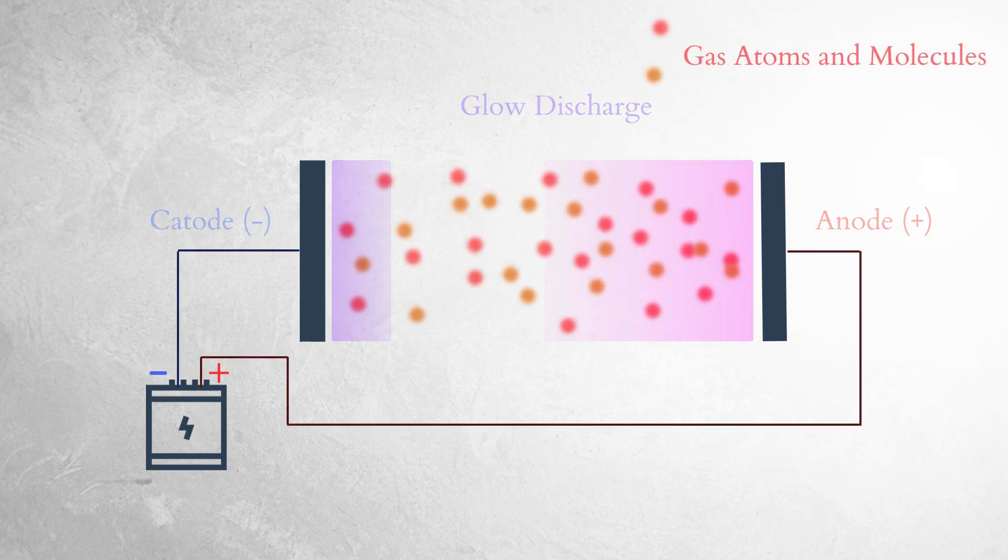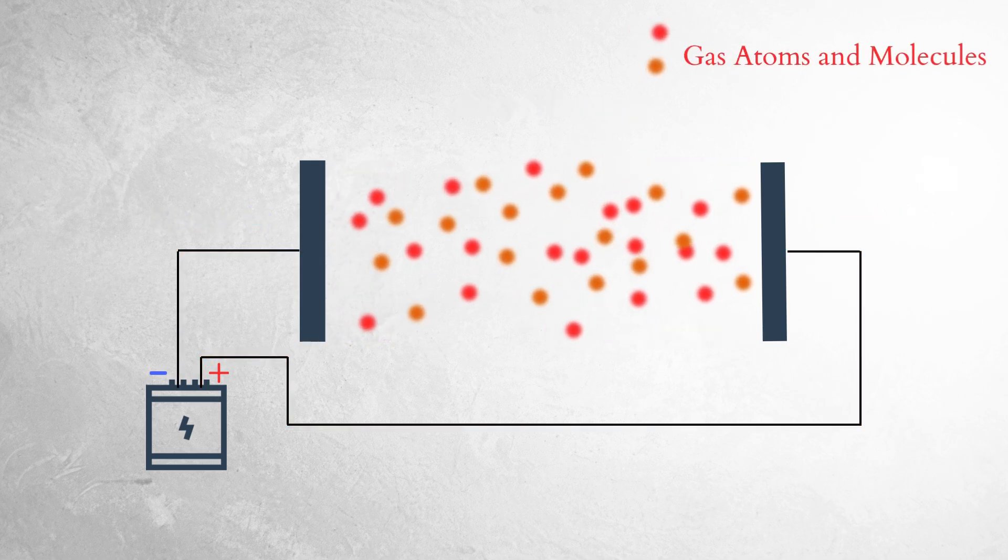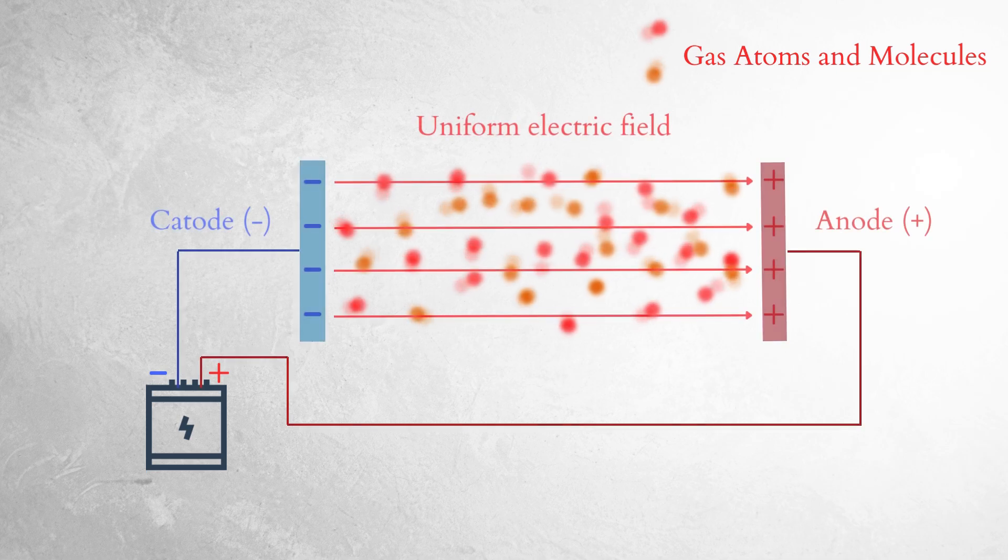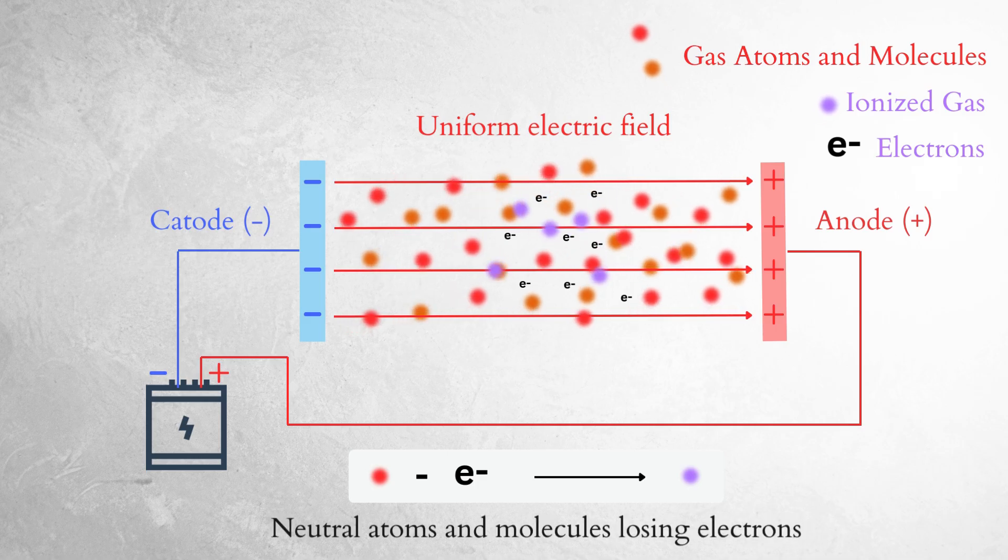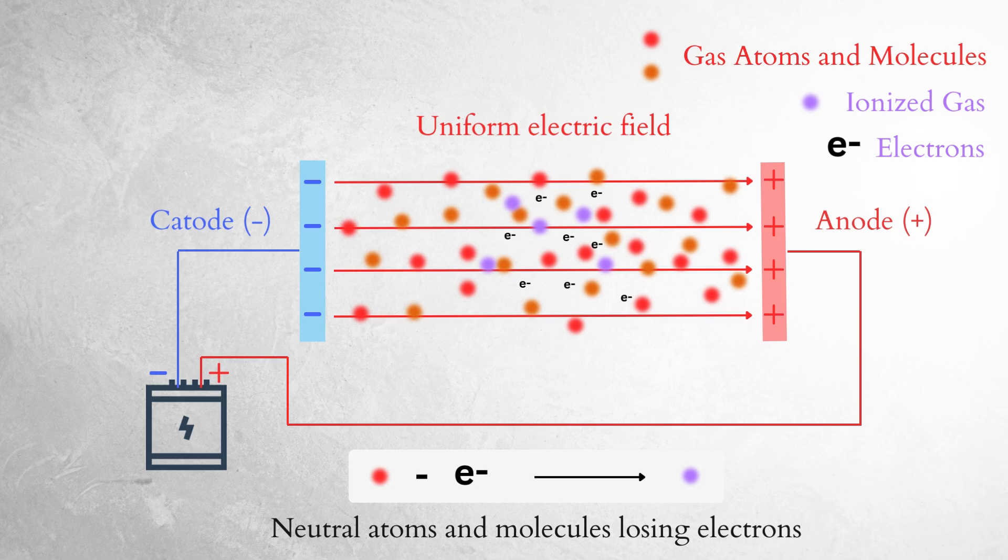A glow discharge is a type of plasma created by an electrical current that passes through a gas. Voltage is applied between the two electrodes, and some of the gas atoms are ionized by colliding with other atoms. The low pressure in the chamber increases the mean free path, which allows the atoms to gain enough energy from collisions to ionize.